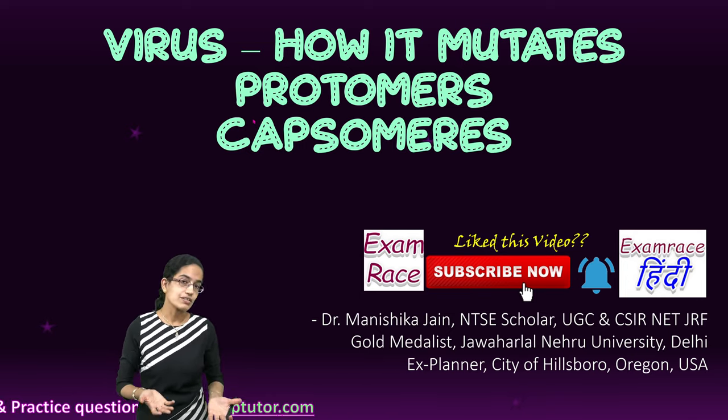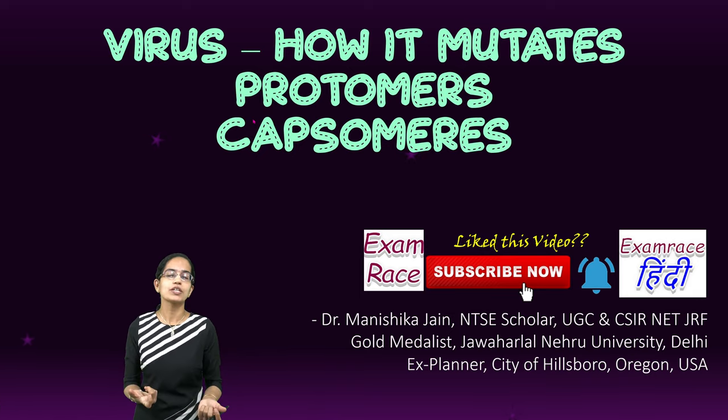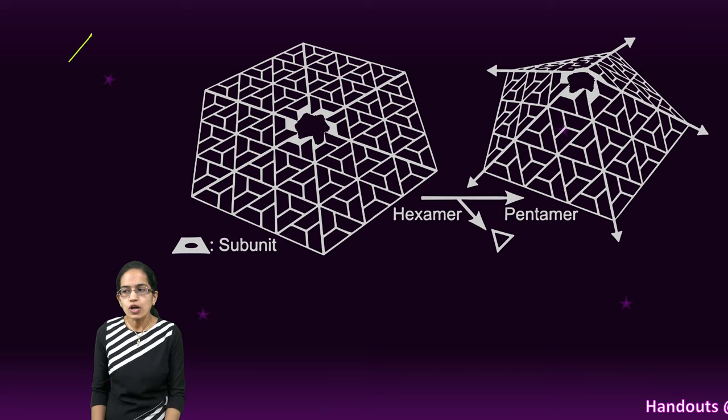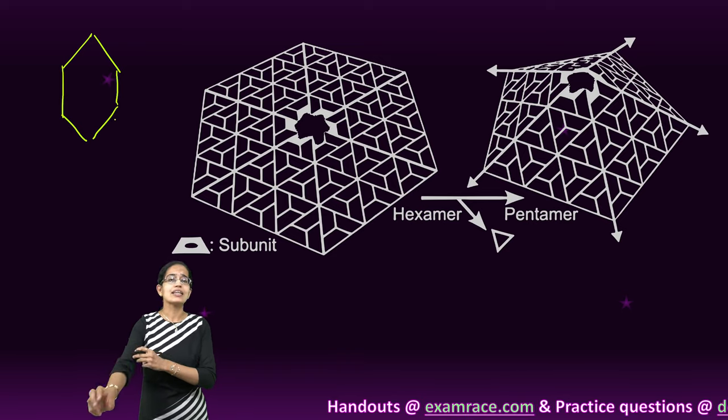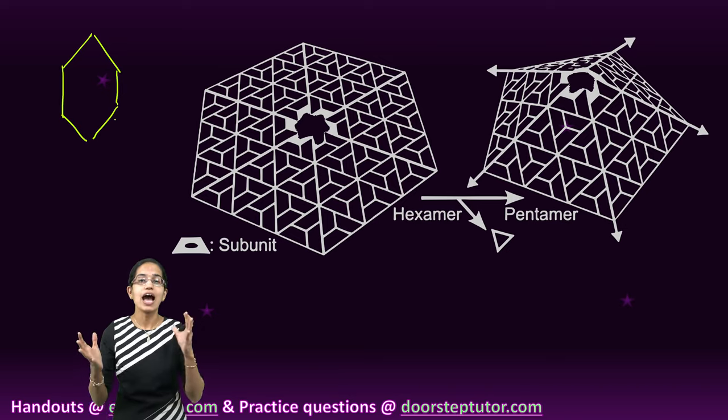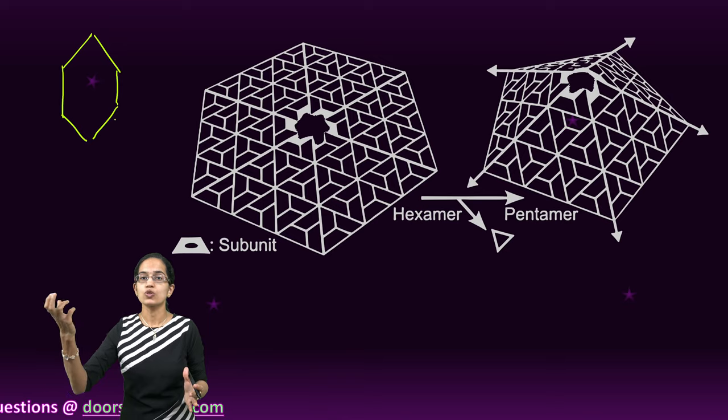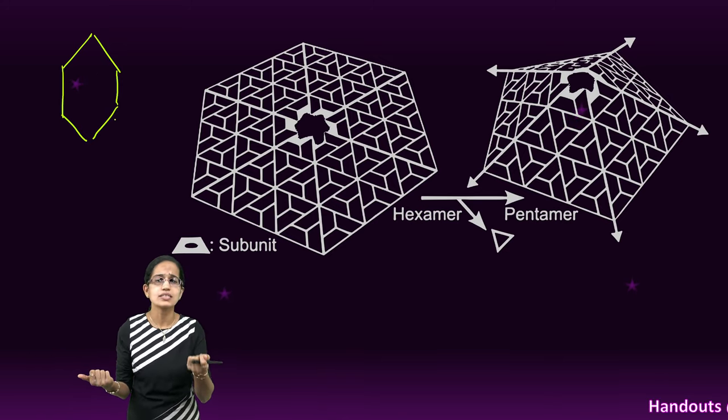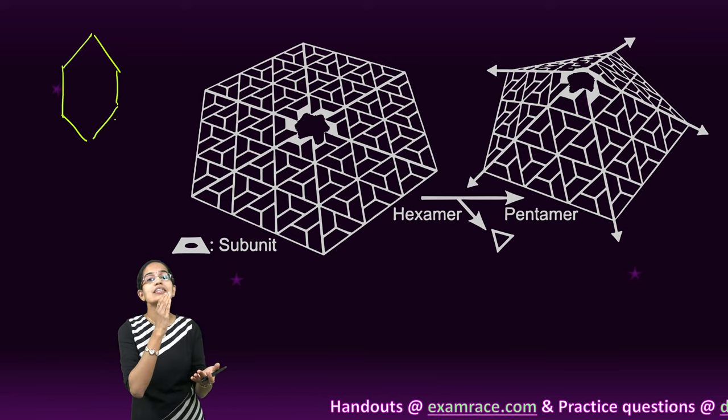To understand what mutation is and how it actually happens, we need to dive into the detailed structure of the virus first of all. When we talk about virus, it is nothing but a very simple entity that is considered between living and non-living organism. Outside the host it remains non-living. As soon as it gets a host, this host could be plants, animals, any living organism, it starts to multiply and reproduce.